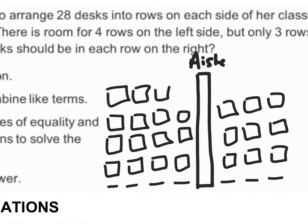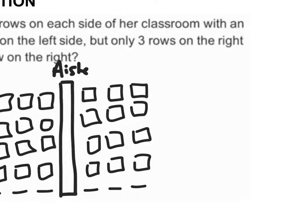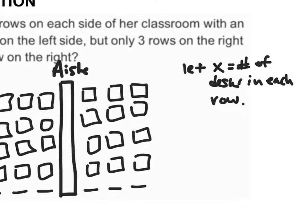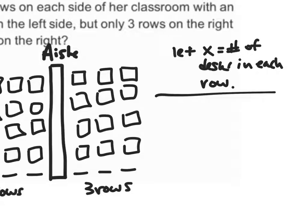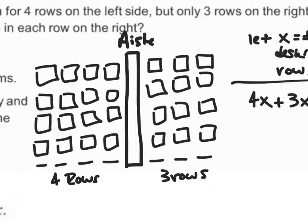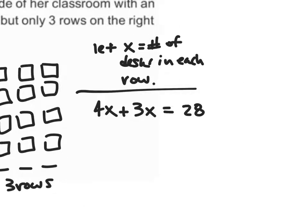Let x equal the number of desks in each row. I have four rows on one side and three rows on the other. If I take the number of rows and multiply by the number of desks in each row, and add them together, I should get a total of 28 desks. So I write: 4x plus 3x equals 28.